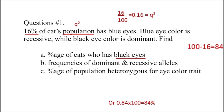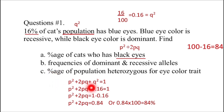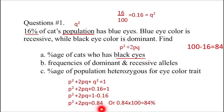We can also solve this using the formula for genotype frequencies. Since both homozygous dominant and heterozygous individuals have black eyes, using P² + 2PQ + Q² = 1, placing Q² = 0.16: P² + 2PQ + 0.16 = 1, so P² + 2PQ = 1 − 0.16 = 0.84. Therefore 84% of cats have black eyes.